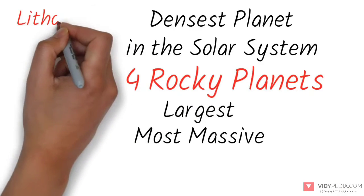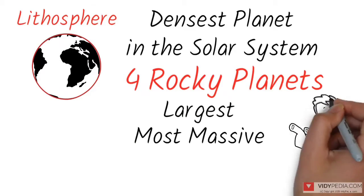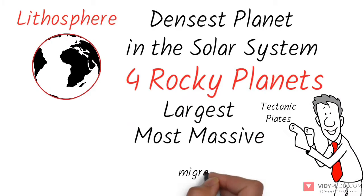Earth's outer layer, the lithosphere, is divided into several rigid tectonic plates that migrate across the surface over many millions of years.